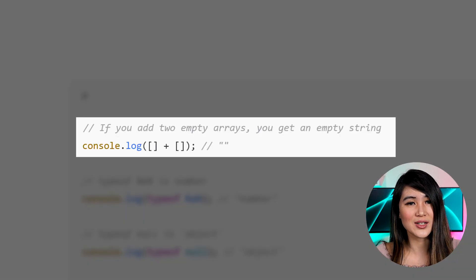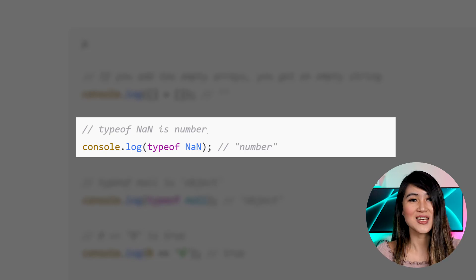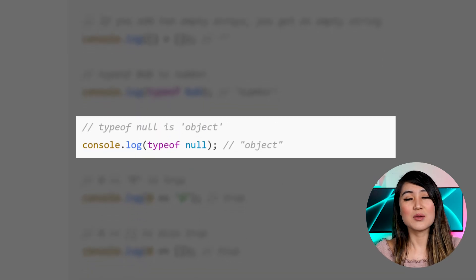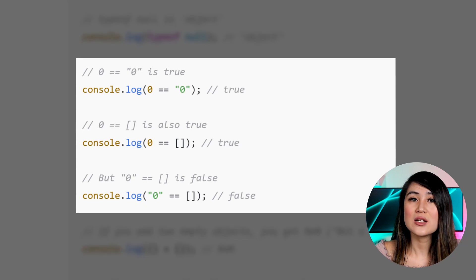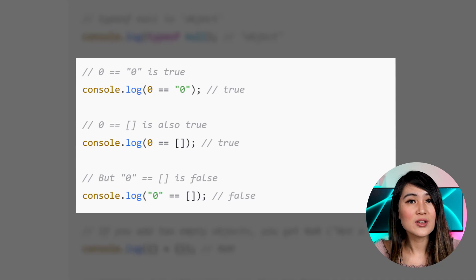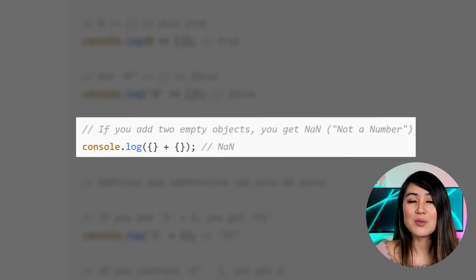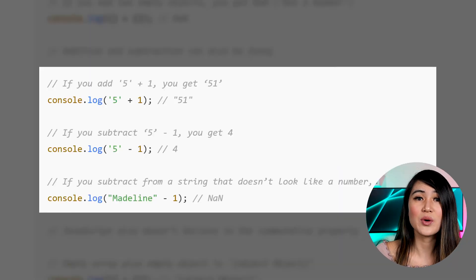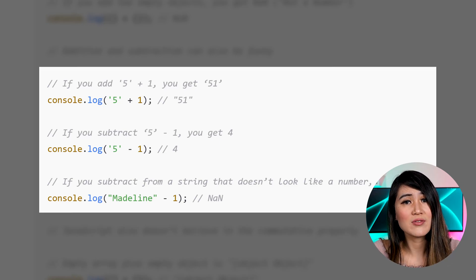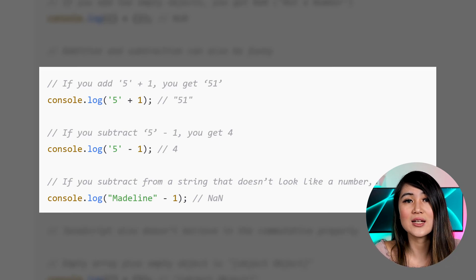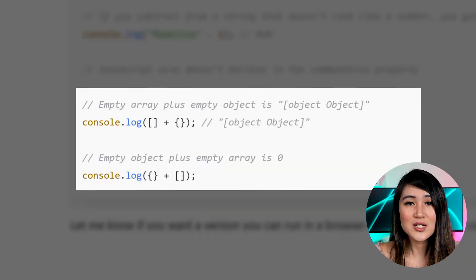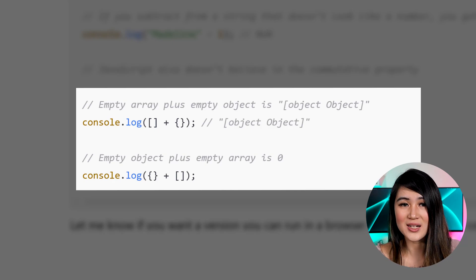If you add two empty arrays, you get an empty string. Type of NaN is number, obviously. Type of null is object, also obviously. The number 0 double equals the string 0 is true. The number 0 double equals empty array is also true. However, the string 0 double equals empty array is false. If you add two empty objects, you get NaN. Addition and subtraction can also be funny: if you add the string 5 to 1, you get 51 as a string. If you subtract 1 from the string 5, you get 4. If you subtract from a string that doesn't look like a number — for example, Madeline minus 1 — you get NaN. JavaScript also doesn't believe in the commutative property, the fundamental math idea that a plus b equals b plus a. Empty array plus empty object is object object, but empty object plus empty array is 0.